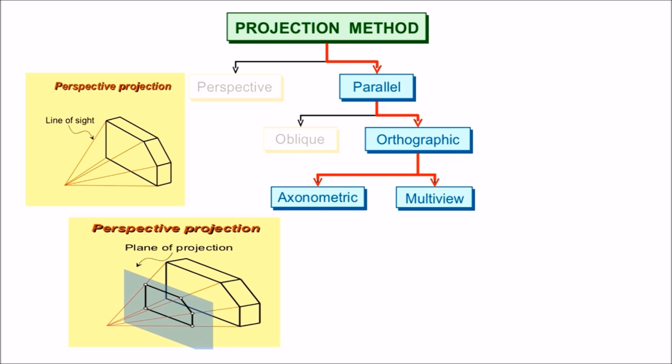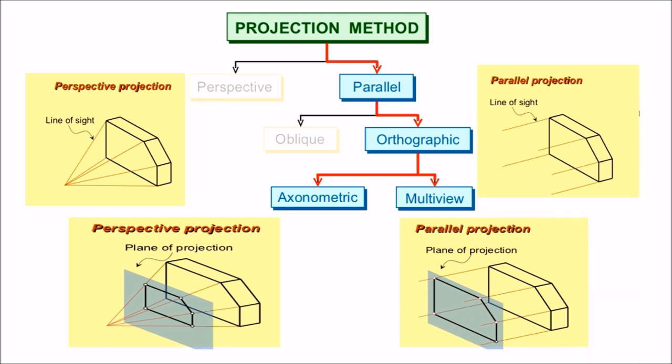Now coming up to the parallel projection. In parallel projection, object itself is placed over the paper and parallel lines are drawn over it to draw down the exact image of the object. Parallel projection is further divided into orthographic and oblique projection.